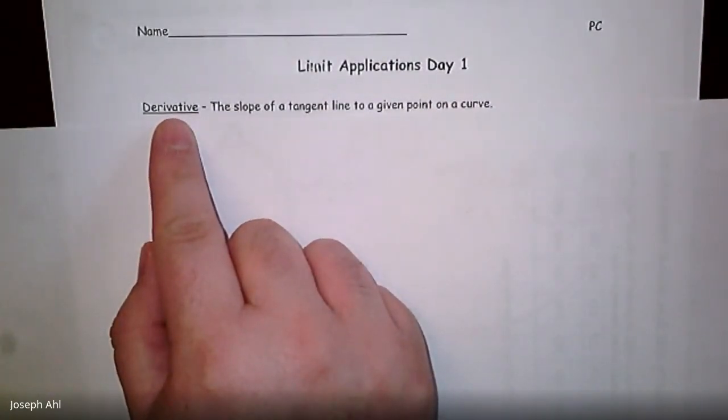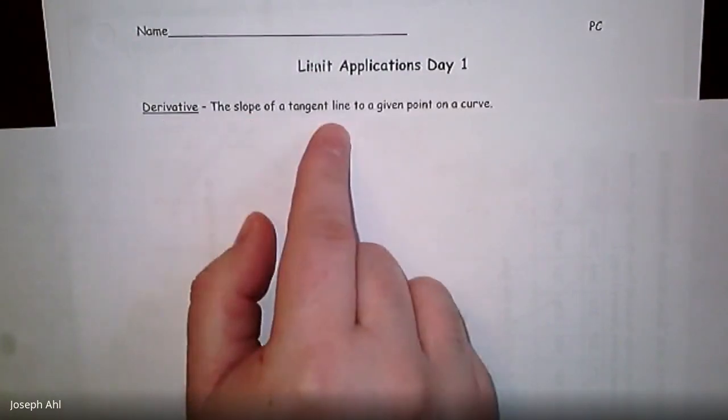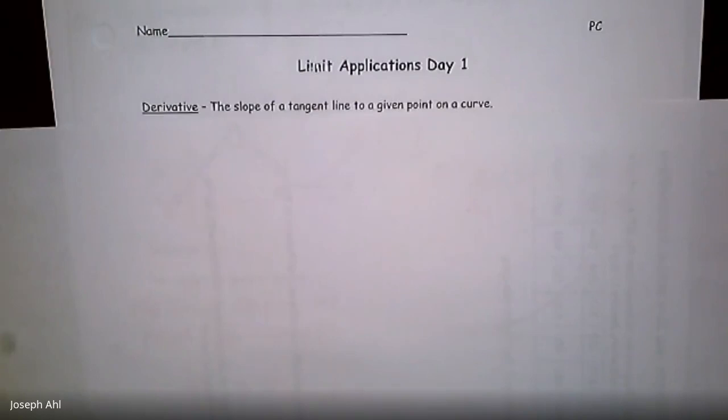Maybe you've even heard of that term before, but essentially what does a derivative boil down to? It is the slope of a tangent line to a given point on a curve. So it doesn't sound all that complicated. And I hope that over the next few days, we're going to use some concepts of things that we're already familiar with and be able to apply them and see how it all relates to the study of calculus here.